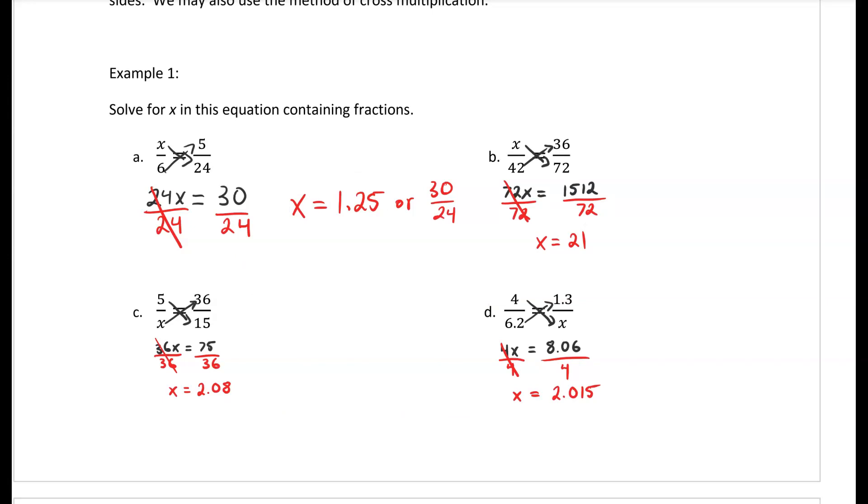So that finishes the four examples on this page. The big thing we want to take away from this is we have one variable that we don't know. When it's set up as fractions, we want to cross multiply it and isolate x by itself. In order to isolate x, you're dividing by the number that's in front of it on both sides of the equation, resulting in one answer for x.